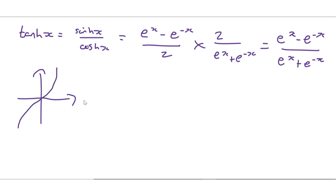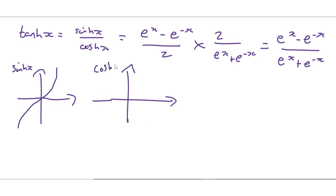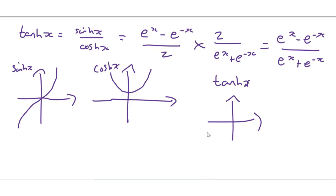So sinh(x) comes into the origin like this and then comes back out again. This is sinh(x). Here we have cosh(x), which comes in this parabolic shape. And tanh(x) is bounded and goes off to these asymptotes here. You should find the value of these asymptotes.